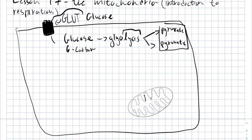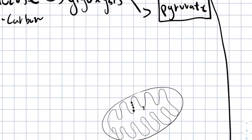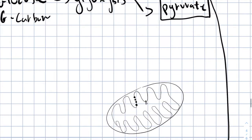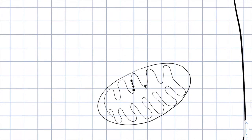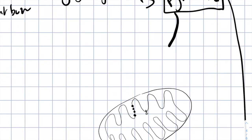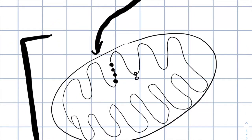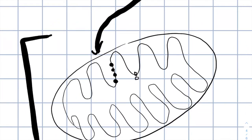The pyruvates, which are currently in the cytosol of the cell, will go to the mitochondria. Know that the mitochondria is the place where the vast majority of ATP is being created in the cells.